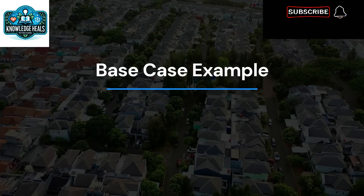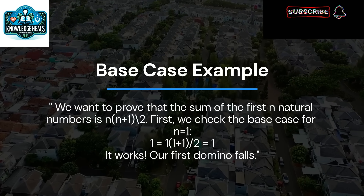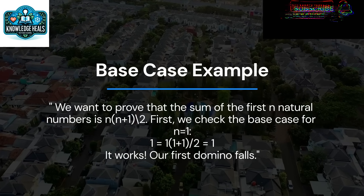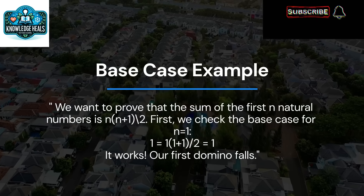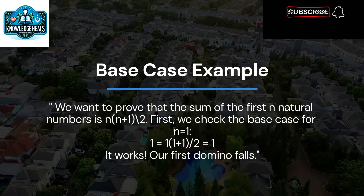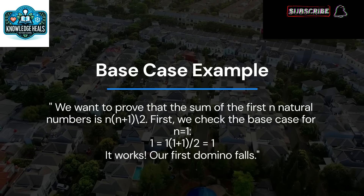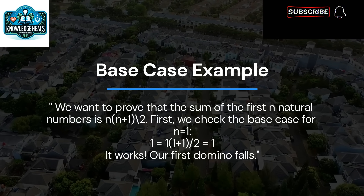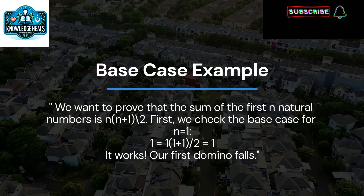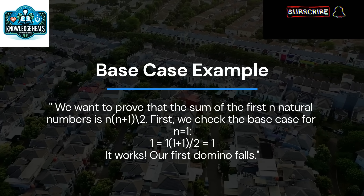Let's see how this works with an example. We want to prove that the sum of the first n natural numbers is n(n+1)/2. First, we check the base case for n equal to one: 1 = 1×(1+1)/2, which equals one. It works!